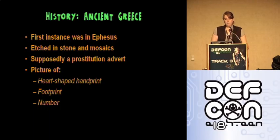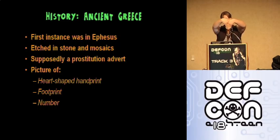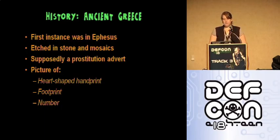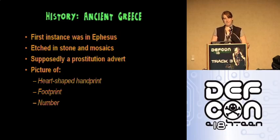The first graffiti drawing was evidently an advertisement for prostitution and was etched into stone near mosaics and walkways. The image itself was of a heart-shaped handprint, a footprint, and a number. The heart-shaped handprint was meant to represent love in exchange for money, and the footprint and number are believed to represent how far one would have to walk in order to receive these services.